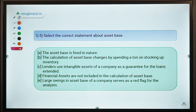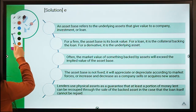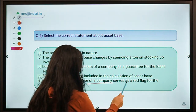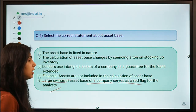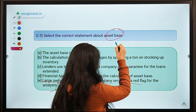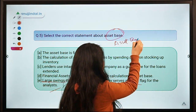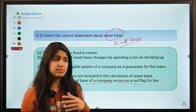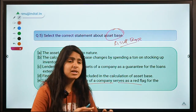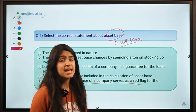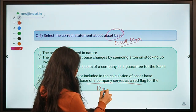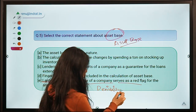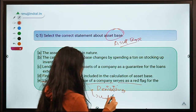Question number 5 also comes from viewer comments. It says: select the correct statement about asset base. The correct option is option E. First, what is the meaning of asset base? Asset base represents the net assets that a company has. It can have different meanings: for a loan contract, it is the collateral backing that loan; for a derivative contract, it is the underlying asset; and for the financial position of a company, it is net assets — assets minus liabilities.